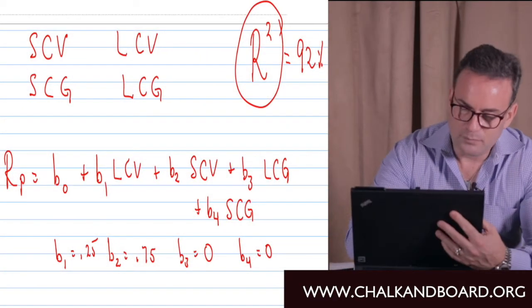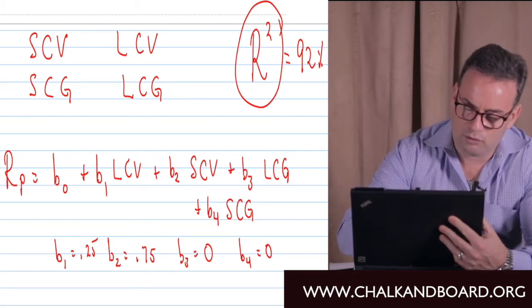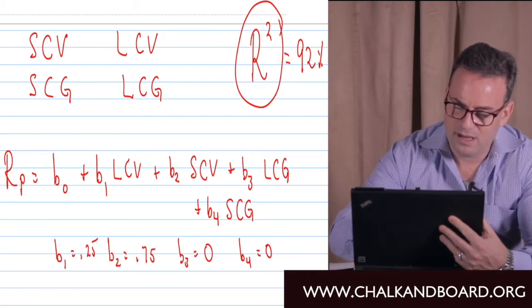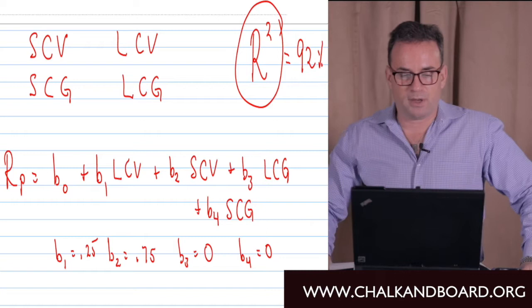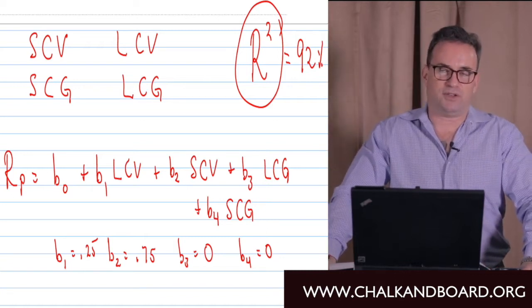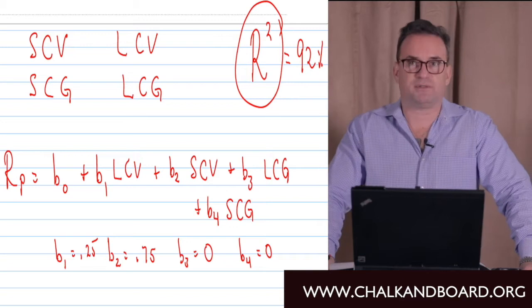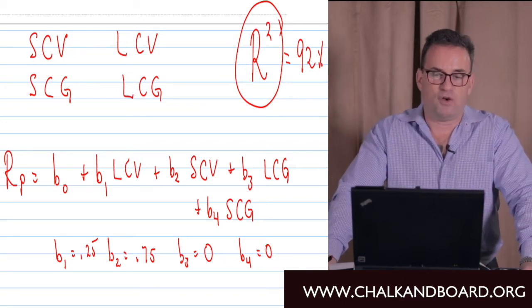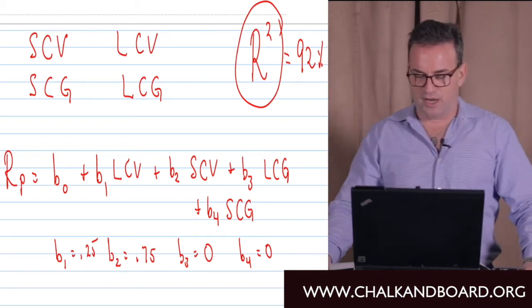Looking at the screen, let's label our indices: SCV for small cap value, SCG for small cap growth, LCV for large cap value, and LCG for large cap growth. We're going to regress the returns of our manager's portfolio against these four indices, with one index to represent each of these four asset class styles. Let's say we run the regression and here's what we get.